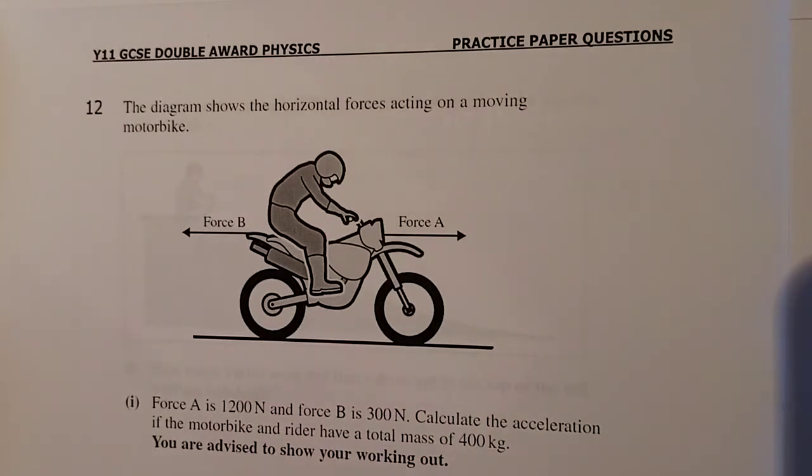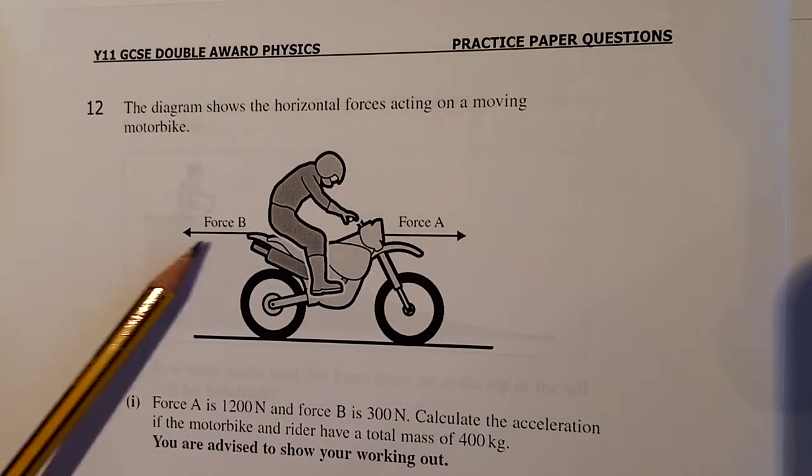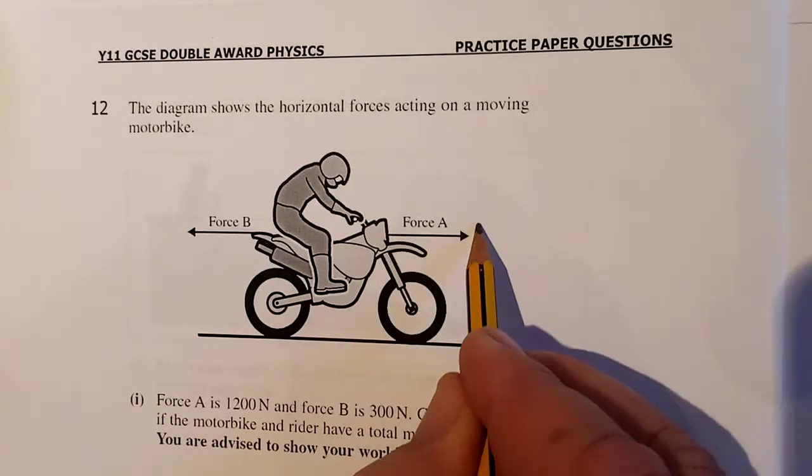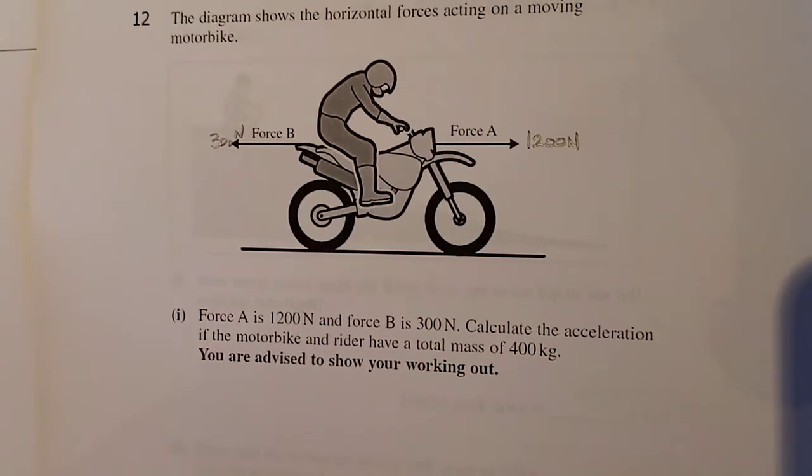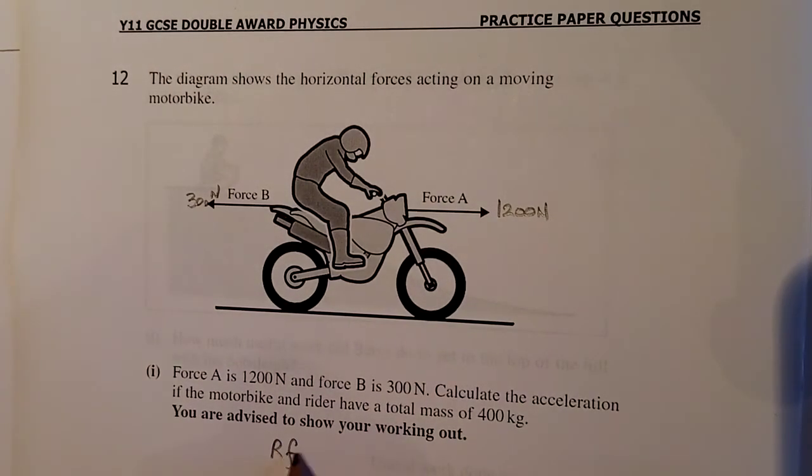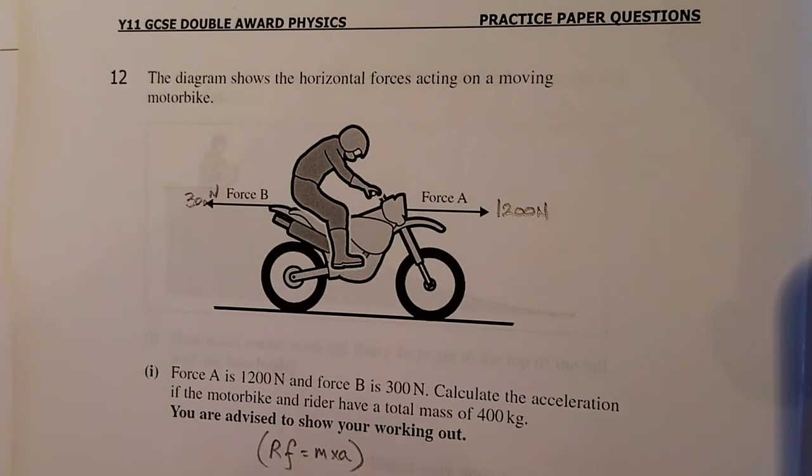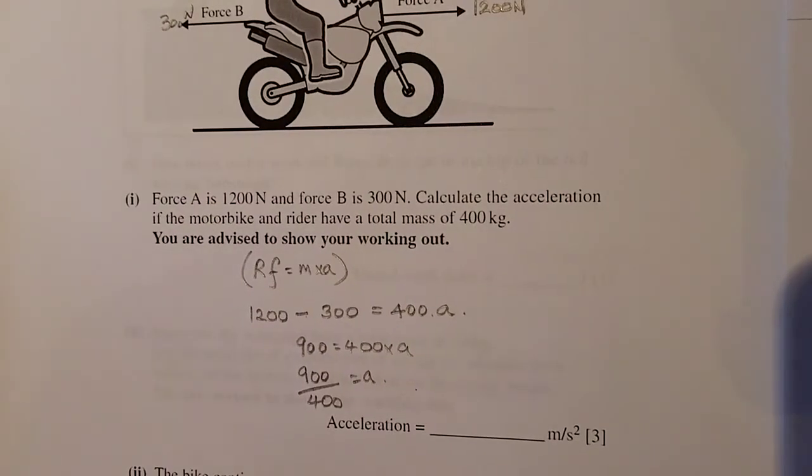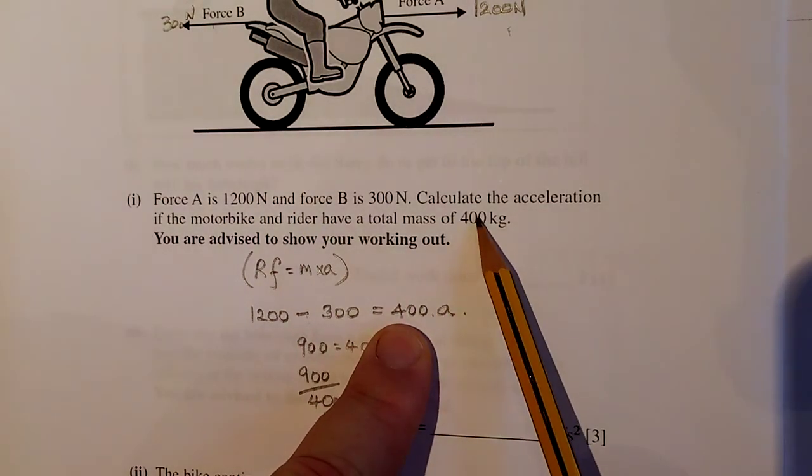Some cube on a motorbike. Now the diagram shows the horizontal force of the electric on a moving motorbike. So force A is going to the right. That's a vector. It's a force. It'll have a size and a direction. This is also a vector. It'll have a size and a direction. Force A is 1200 newtons. Force B is 300 newtons. Calculate the acceleration of the motorbike if the rider has a total mass of 400 kilos. Now this is Newton's second law. Resultant force equals mass by acceleration. So it's 1200 to the right, take away 300 to the left. That's your resultant force is equal to mass, 400 times A. 900 is equal to 400 times A.